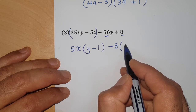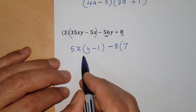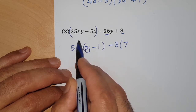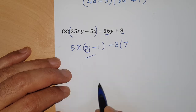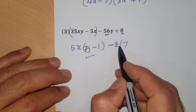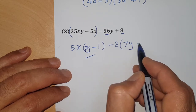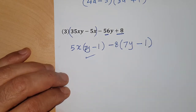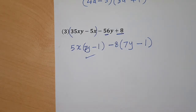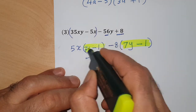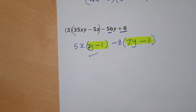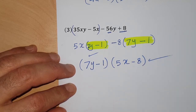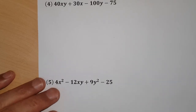For the first group, take out 5x: 35 divided by 5 is 7, x over x is 1 — giving 5x(7y - 1). For the second group with negative 8: 56y divided by 8 is 7y, which becomes negative; 8 divided by negative 8 is negative 1. The common factor (7y - 1) appears in both groups. Take it outside. The final answer is (7y - 1)(5x - 8).